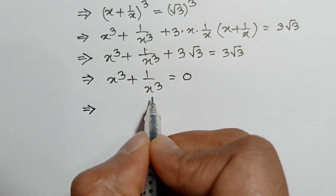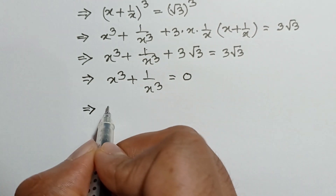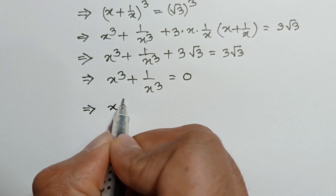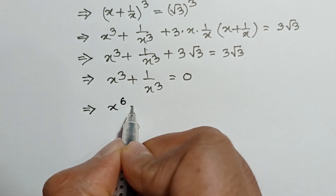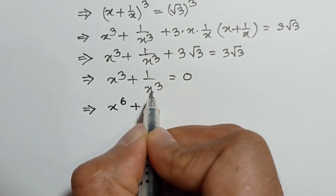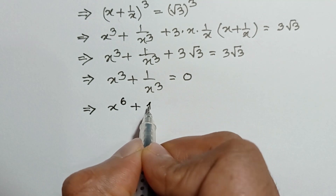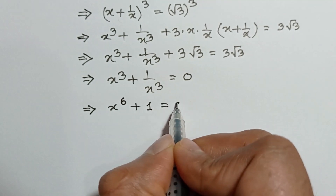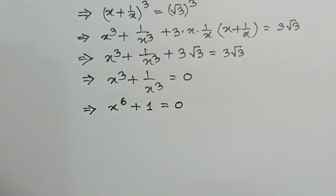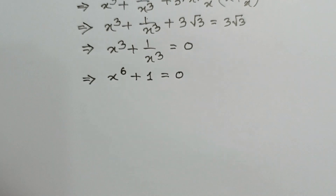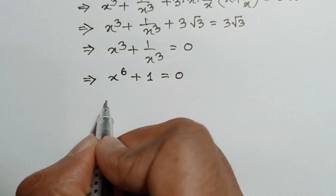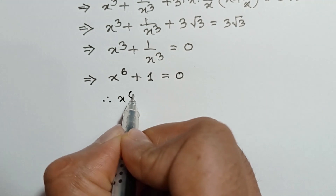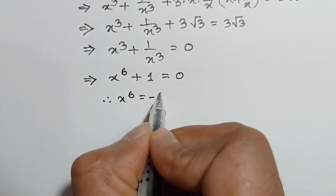If we multiply by x cube on both sides, we get x cube times x cube is equal to x to the power 6, plus x cube — x cube cancels out — so it means 1 plus 0 times x cube equals 0. So x to the power 6 is equal to negative 1.